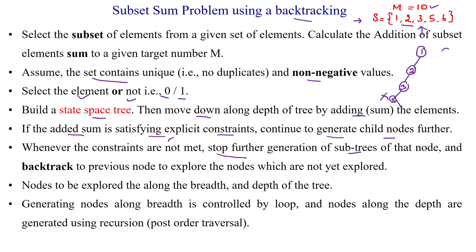For example, if you start with 2, then from 2 you can select the next vertex. After 2 you can select 3, then after that you can select 5. You can see that this gives you the solution — we have reached 10. So if the sum of values is less than or equal to target value m, you can stop the algorithm.